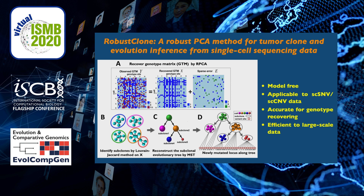RobustClone is a model-free method, which can be applied to both scSNV and scCNV data. It is accurate for genotype recovery problems and is efficient and scalable to large-scale datasets.